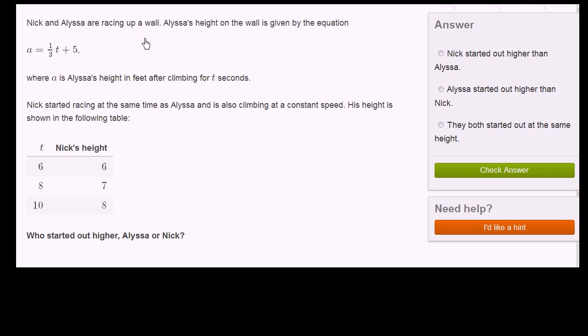Nick and Alyssa are racing up a wall. Alyssa's height on the wall is given by the equation a = 1/3t + 5, where a is Alyssa's height in feet after climbing for t seconds. Nick started racing at the same time as Alyssa and is also climbing at a constant speed. His height is shown in the following table.